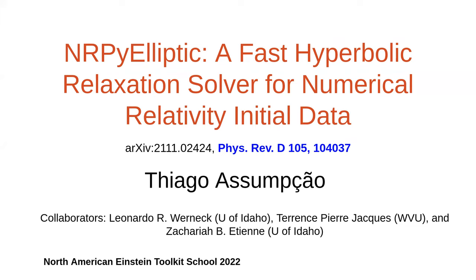Hi everyone. I am Tiago. I'm going to be talking about NERPOLYPTIC, a fast hyperbolic relaxation solver for neural relativity initial data. The paper is on the archive and there's also the official published version at FISCO UD. This was a collaboration with Leo Wernick, Garen Spierja, and Zach Tien.